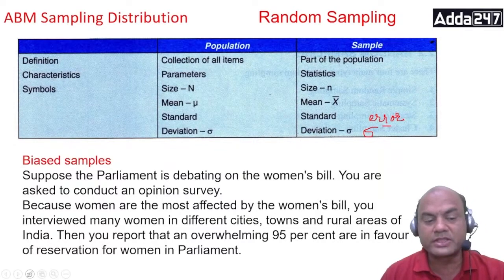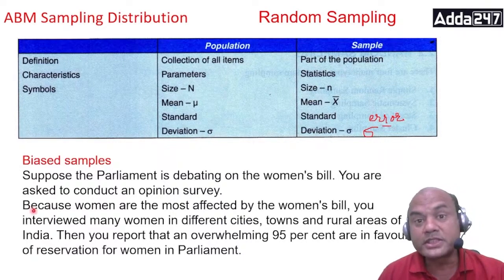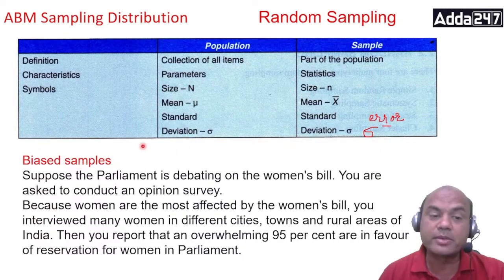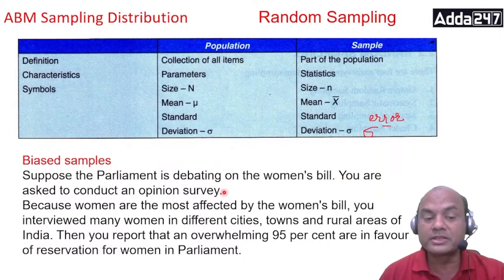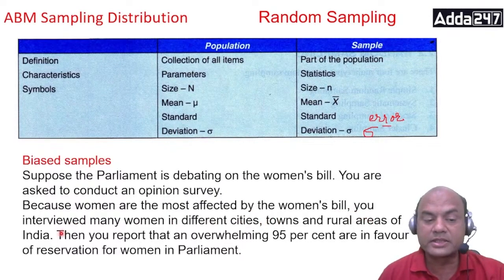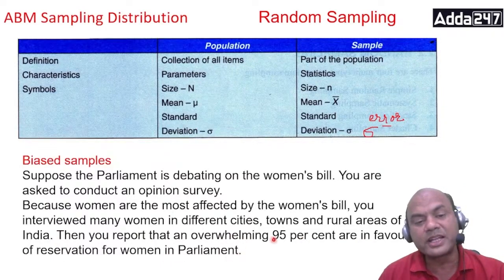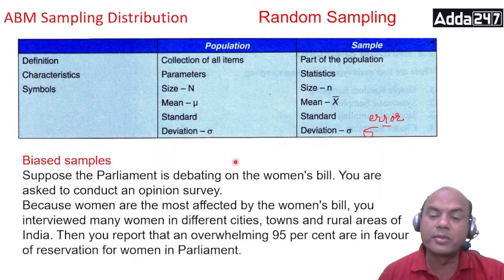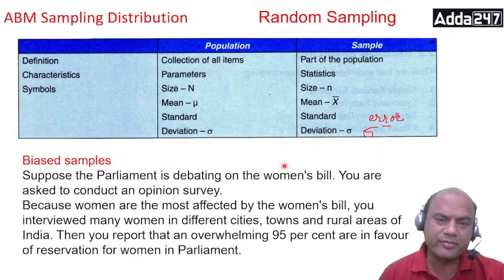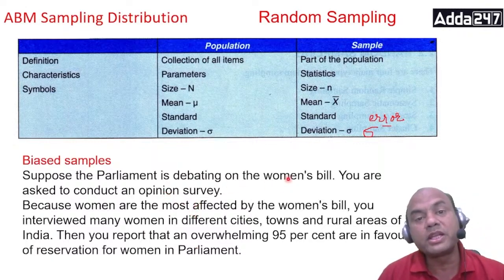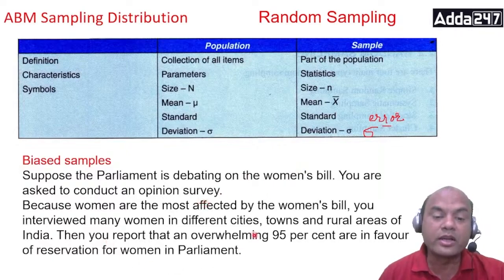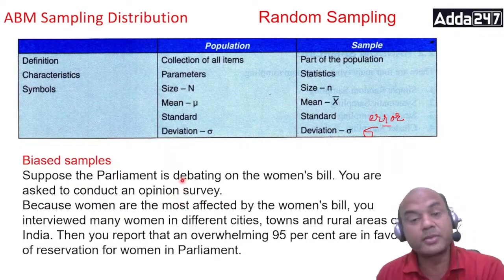What are bias samples? Suppose parliament is debating on the women's bill and you are asked to conduct an opinion survey. Because women are most affected, you interview many women in different cities, towns and rural areas of India, then report that an overwhelming 95% are in favor. Now that is a bias sample — if you ask only women about the women's bill, they will definitely support it. So the population should be equally divided; you should also ask those who are not in favor, otherwise it becomes a bias sample.